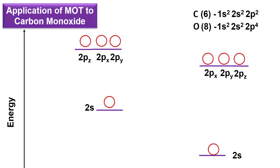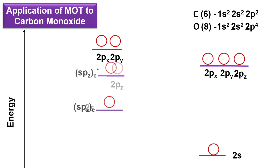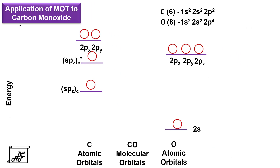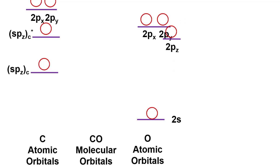In carbon, the energy gap between the 2s and 2pz orbital is very small — 510 kJ/mol. Due to similar symmetry and this small energy gap, the 2s and 2pz of carbon mix to form two new orbitals: the bonding orbital spz(carbon) and the antibonding orbital spz*(carbon). In the case of oxygen, the energy gap between 2s and 2pz is large — 1430 kJ/mol — but to overlap with the carbon atomic orbitals, the 2s and 2pz of oxygen also mix to form two new orbitals: the bonding spz(oxygen) and antibonding spz*(oxygen).